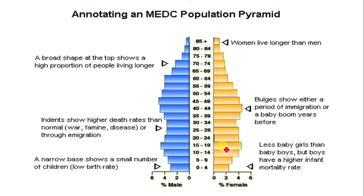Now let's look at annotating an MEDC population pyramid. For more economically developed countries, you find that they have a low birth rate, so as a result they have a narrow base — the population of children being born is quite low. There are slightly fewer baby girls than baby boys, but boys have higher infant mortality rates than girls generally. Girls also tend to live longer than boys.